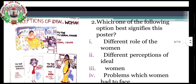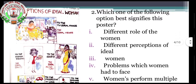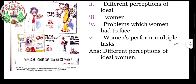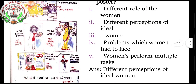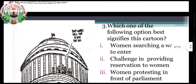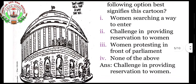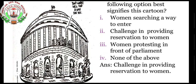The second picture shows an idle woman. The question asks: which of the following options best signifies this posture? The answer is different perception of idle woman. This picture gives the message of different perceptions of idle woman. You can see it clearly in your textbook.